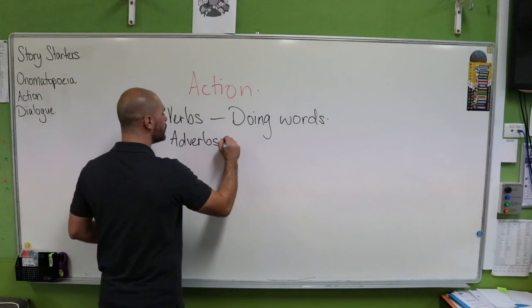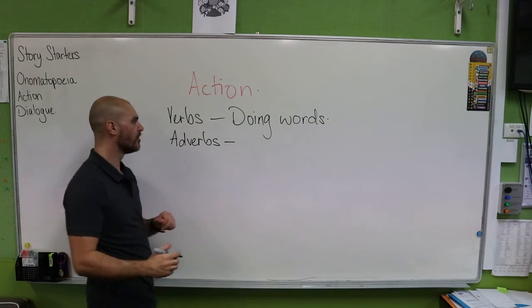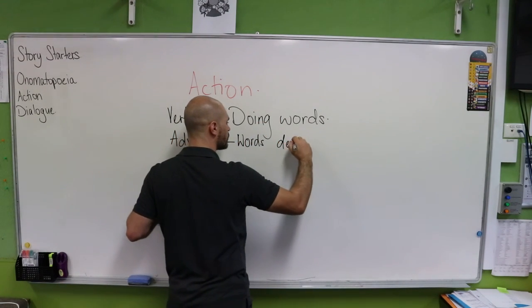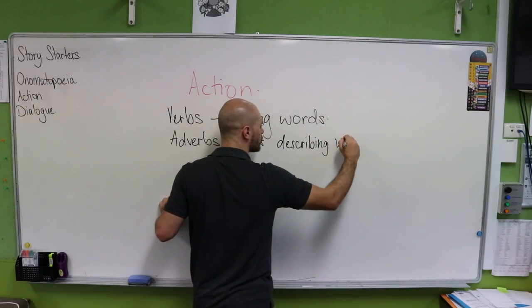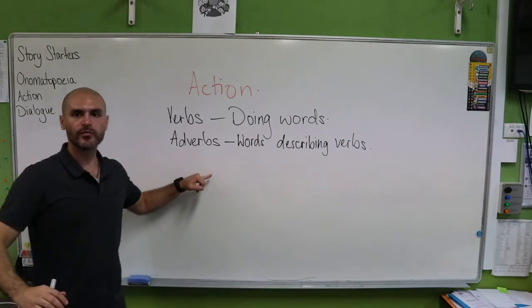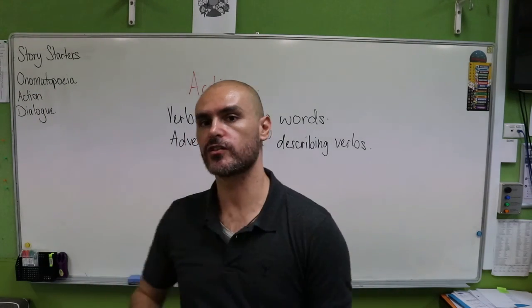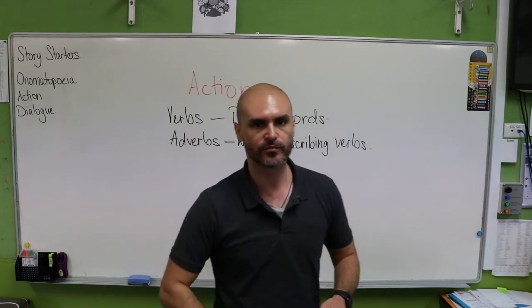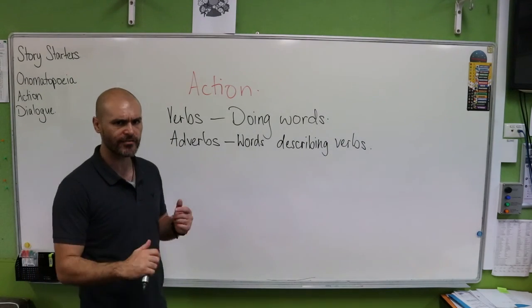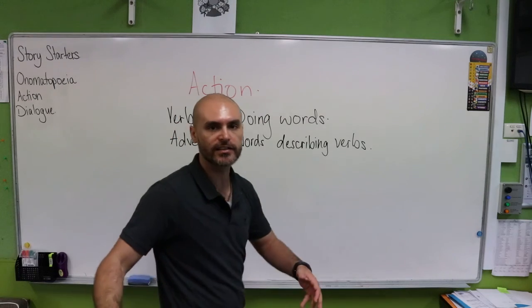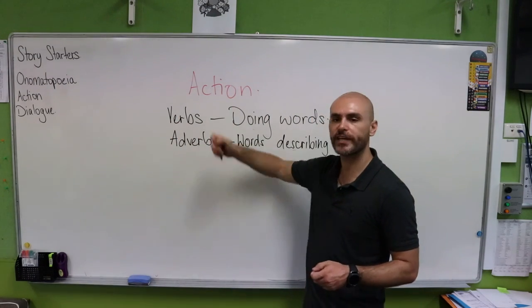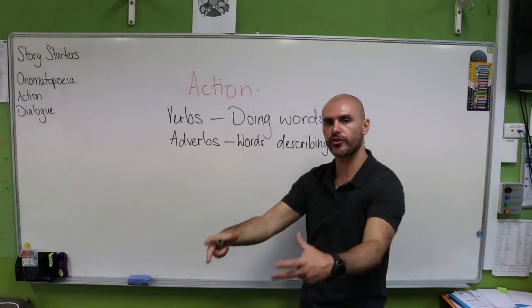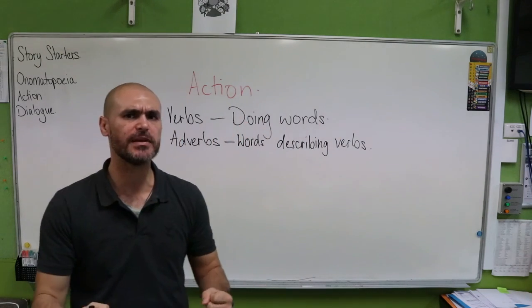So we're jumping over to adverbs. These are words that describe verbs. When we're looking at our adverbs we're looking at words like quickly, fast, slowly, haphazardly — whatever words you can think of that describe the verbs that you're seeing. Carefully. 'He was running carefully, trying really hard not to step on any of the cracks in the volcano.' When we're looking at our action scene, we're trying to find all of the different things that draw the reader into the story, make it that little bit more engaging, bringing them in, holding on to their attention.